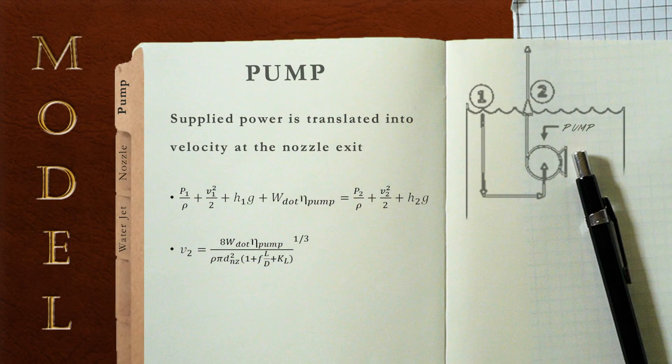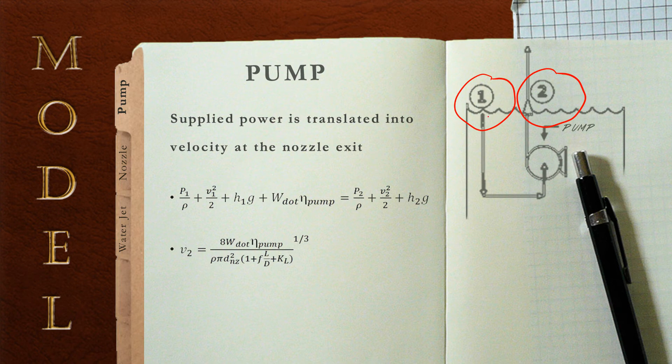As we started to model the show, we decided to use the mechanical energy balance to model how the water was being pumped from the pump and how this translated into the velocity being shot from the nozzle. We chose two points: one being the surface of the water, and the second being the entrance of the nozzle, and then created an equation for the velocity as a function of the work of the pump.